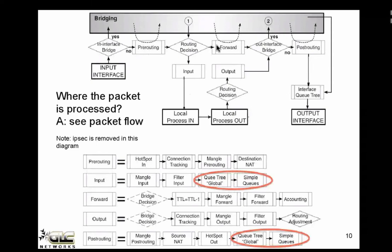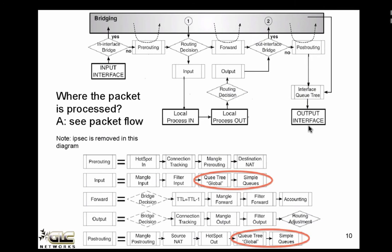Forward means the destination IP address of the packet does not end up at the router itself — it must be forwarded to another interface. Input means the destination is the router itself, going to post-routing, then to the interface queue. If you zoom in, there's sub-processing inside pre-routing, input, output, and forward.